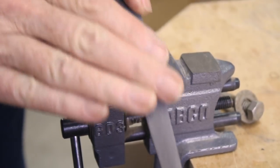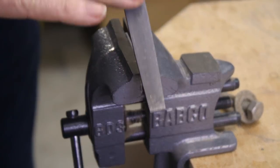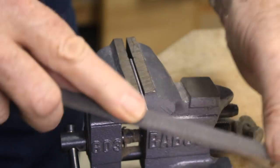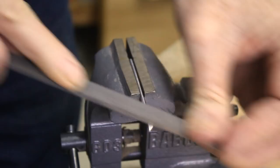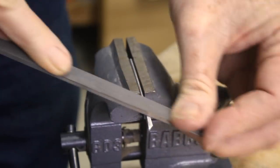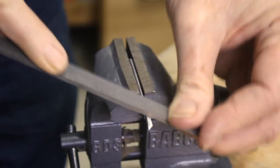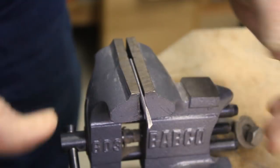First, file the end off at an angle to create a skewed edge. Next, turn the blank 90 degrees and taper one side. Repeat this process on the other side. Do not bother to make the blade maximally sharp at this point. We can do that later.